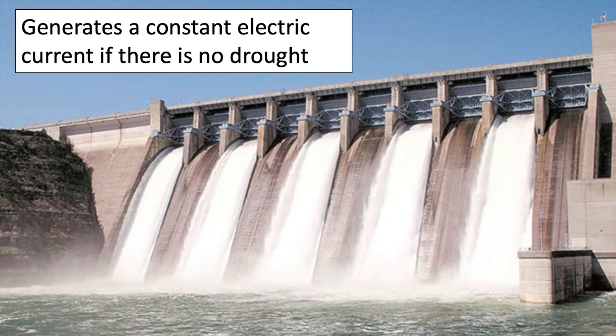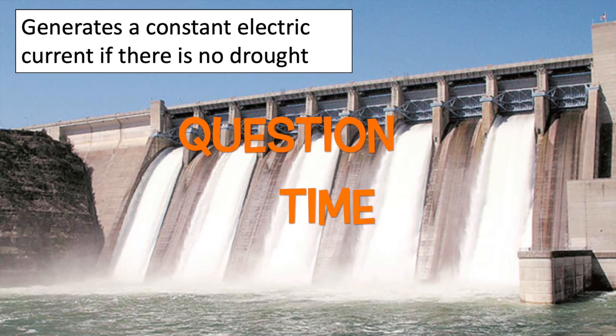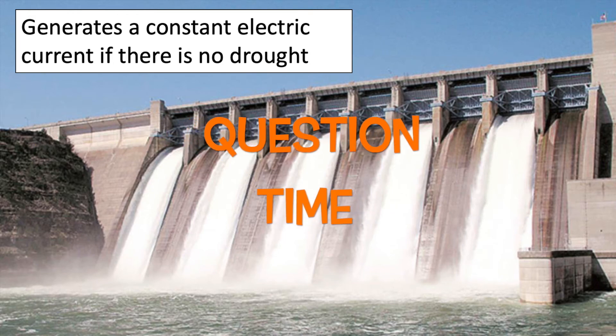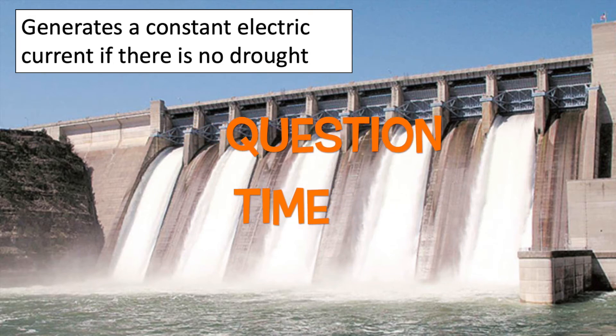However, a hydroelectric dam does generate a constant electric current, provided there is no drought. It's question time — attempt these questions to check your understanding.